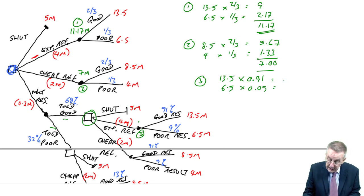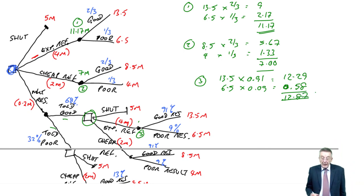So, multiplying, 12.29, but we'd have had a bit of rounding. 0.58. So, the benefits of expensive would be 12.87.